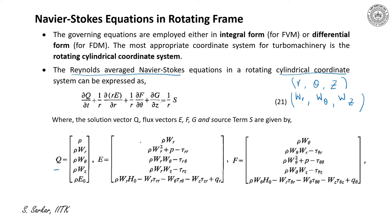The flux vector E is: [rho·w_r; rho·w_r² + p − tau_rr; rho·w_r·w_theta − tau_r_theta; rho·w_r·w_z; rho·w_r·e_0 − w_r·tau_rr − w_theta·tau_r_theta − w_z·tau_rz + q_r]. The first row represents the continuity equation, the next three rows represent the momentum equations in r, theta, and z directions, and the last row is the energy equation. Similarly, I have defined flux vectors F and G.